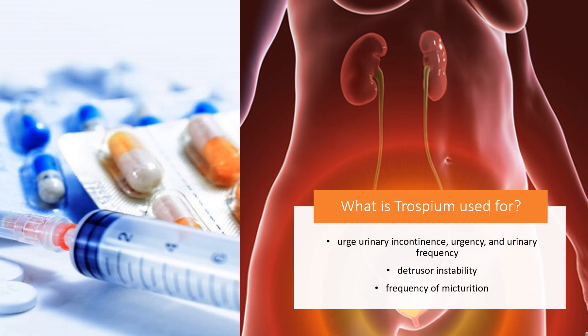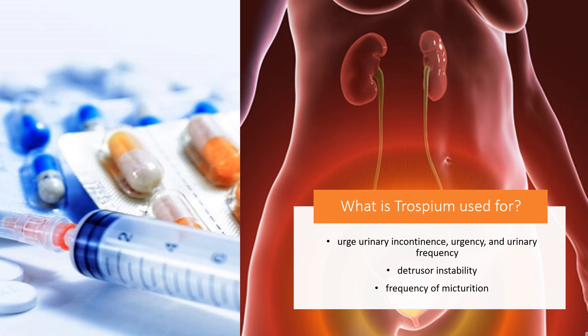What is trospium used for? For the treatment of overactive bladder with symptoms of urge urinary incontinence, urgency, and urinary frequency, detrusor instability, and frequency of micturition.